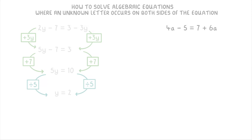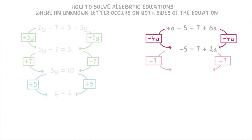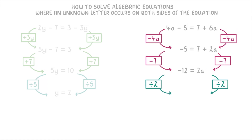For this last one, it'll be easiest to keep the a's on the right and the numbers on the left. Subtract 4a from both sides to get -5 = 7 + 2a, then subtract 7 to get -12 = 2a. Divide both sides by 2 and you find that a = -6.